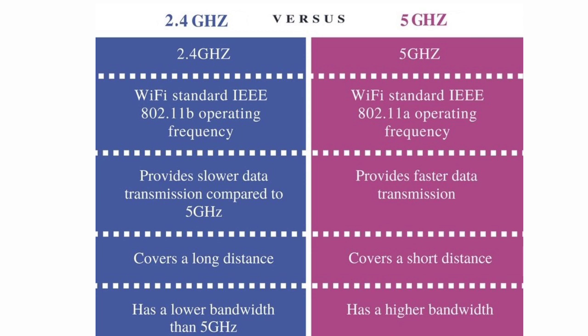While 5 GHz WiFi covers a shorter distance, it performs at a higher speed. High frequency signals cannot easily pass through solid objects such as walls or buildings. Therefore, 5 GHz is only capable of covering a minimum distance. However, high frequencies allow faster data transmission, so the main advantage of 5 GHz WiFi is its capability to transmit data at a higher rate.